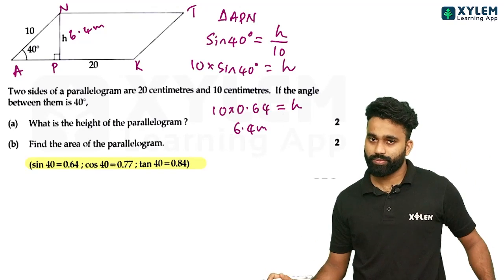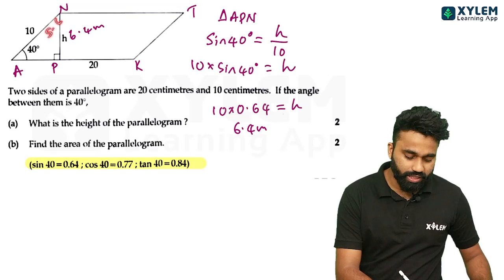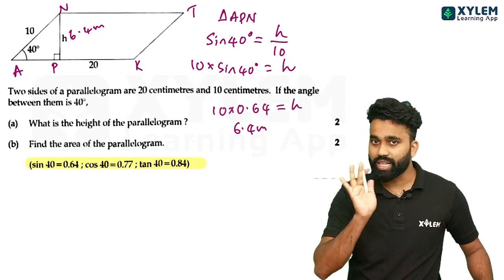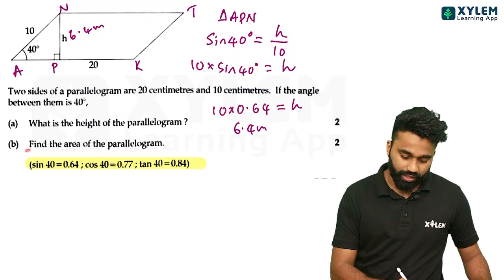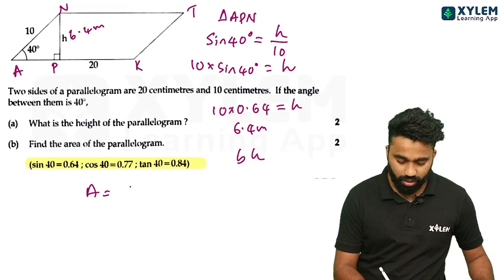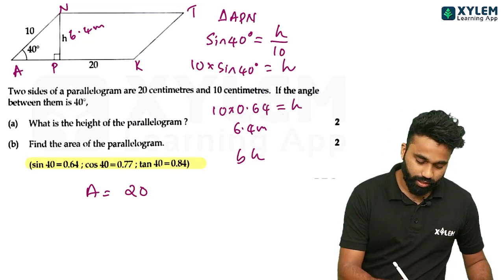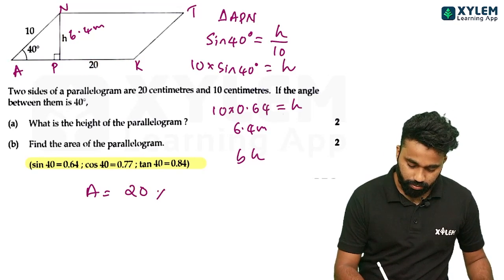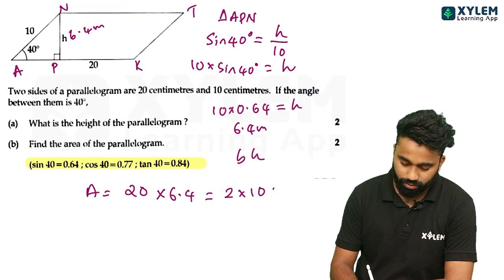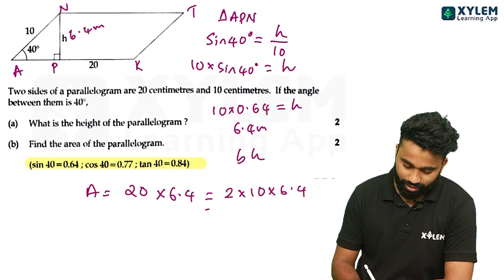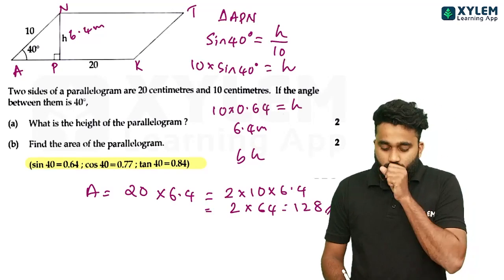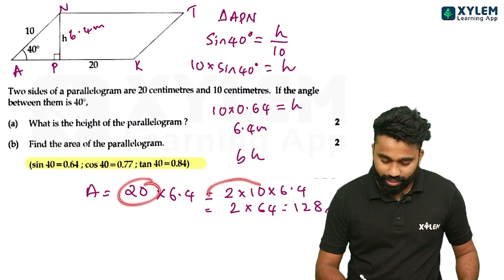Clear? Now we have to write cos 50. The cos 50 is adjacent by hypotenuse. The area of the parallelogram — area equals base × height. The base is 20 × height. That is 4. We have to write 20 × 10 × sin 4. The area is the answer.